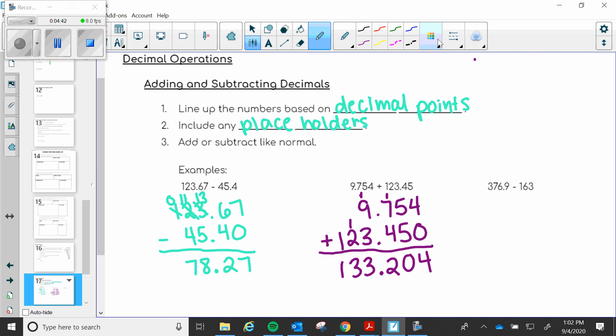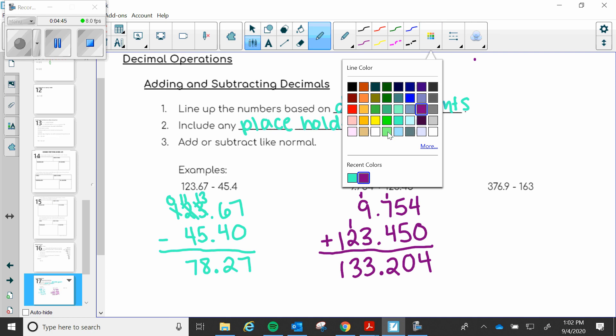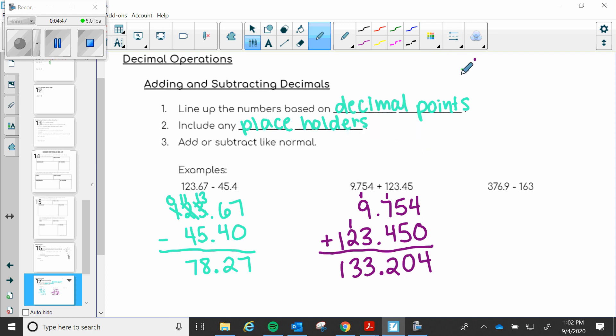And then our last problem. Let's pick a pretty color. I like this one. So let's line up our numbers. 376.9 minus 163. Oh no. This number doesn't have a decimal. So this is just a whole number. We don't have any decimal points. We don't have anything after that.